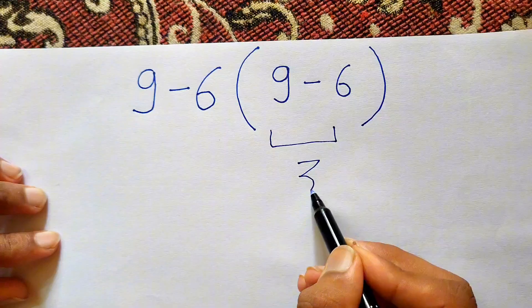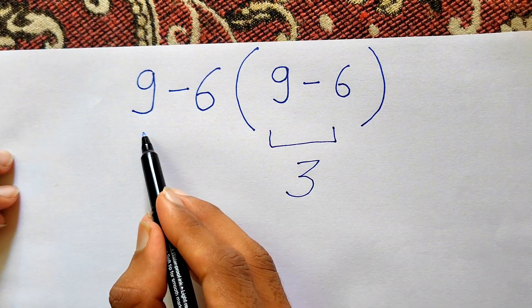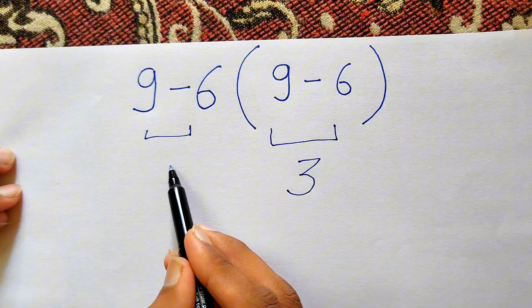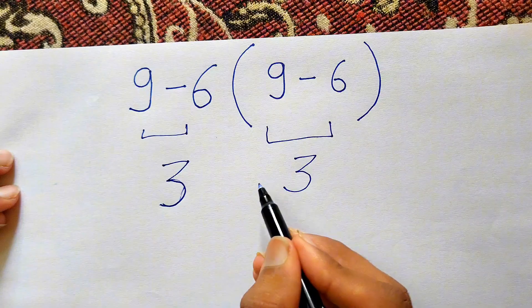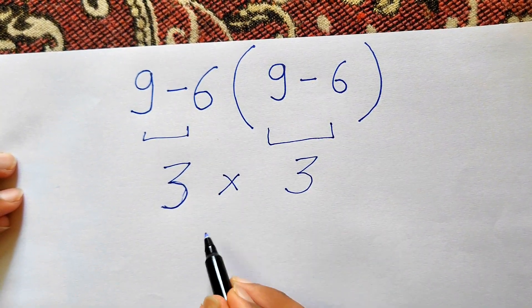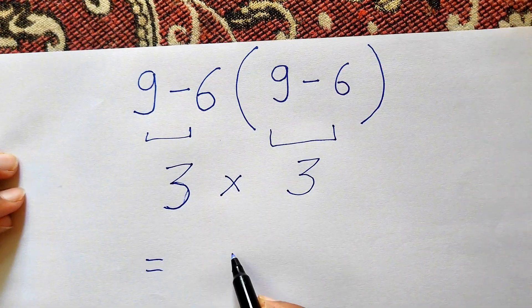That is 9 minus 6 gives us 3. Now they'll solve this 9 minus 6, which also gives us 3. So let me rewrite this. Now they'll do multiplication: 3 times 3 equals 9.